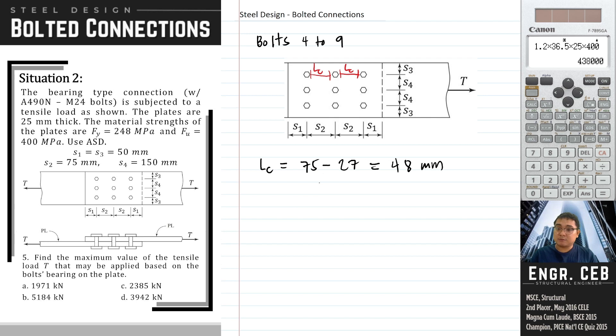So to identify which among the bearing and tear-out will govern, let us compare LC to 2D. Our 2D is 48 and then L sub C is also 48. So if that is the case, they will have the same value because L sub C is equal to 2D. So the capacity for bearing deformation and tear-out will just be the same. So meaning, either of the two formula can be used.